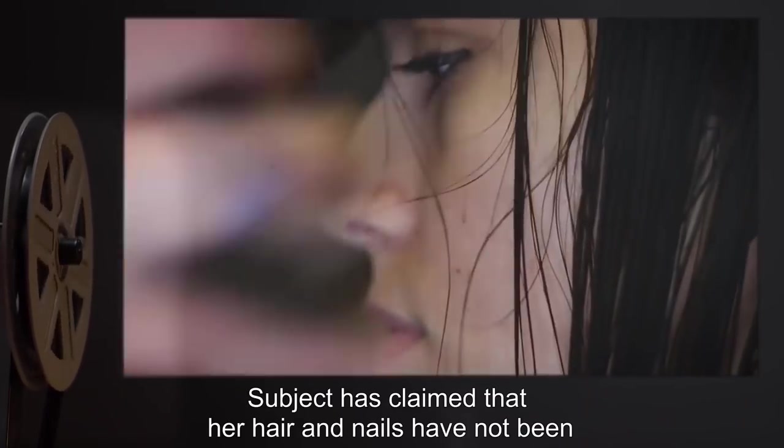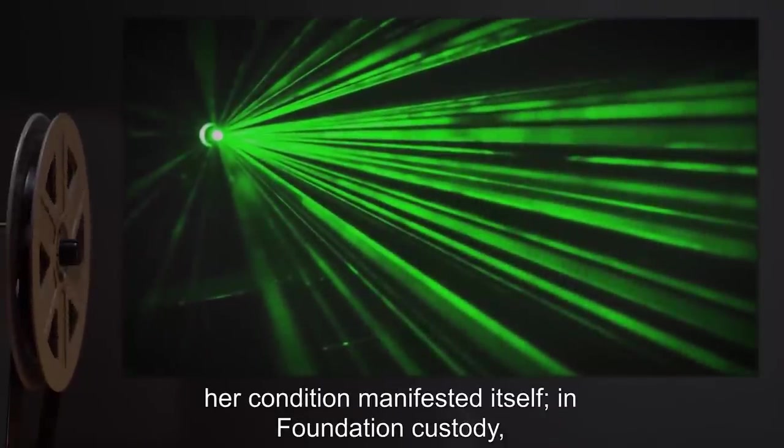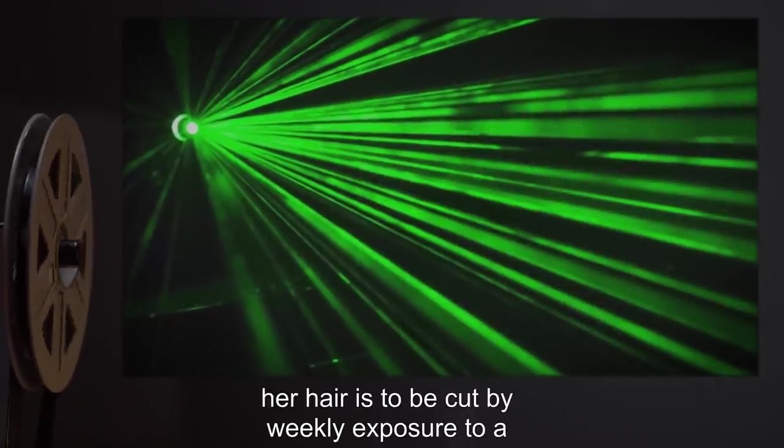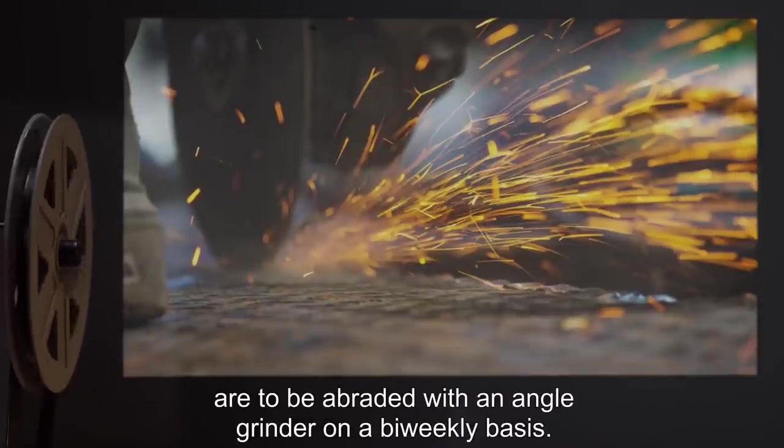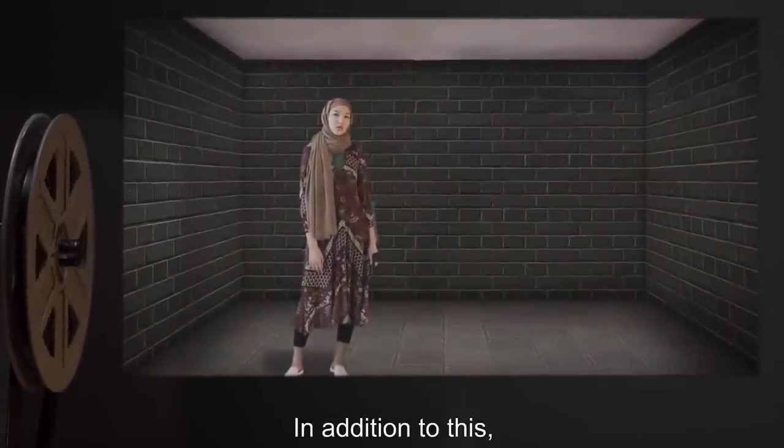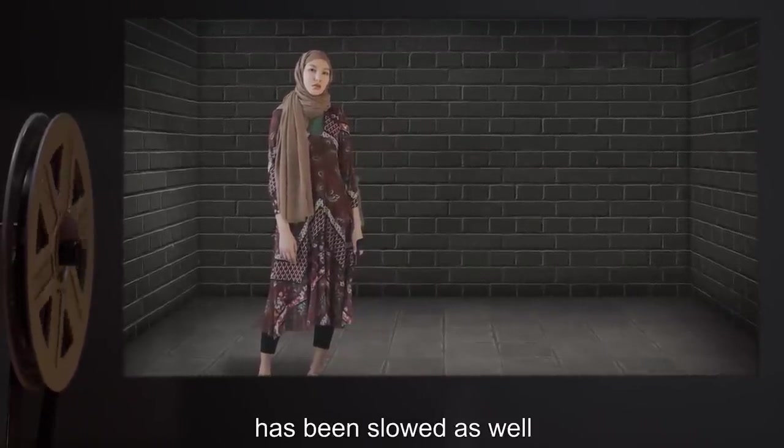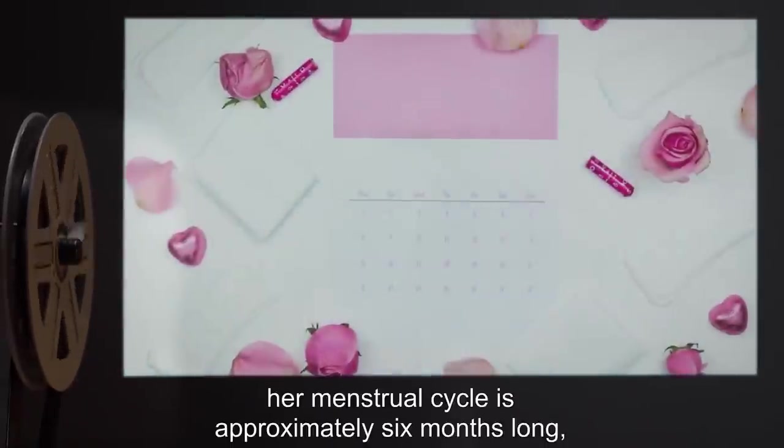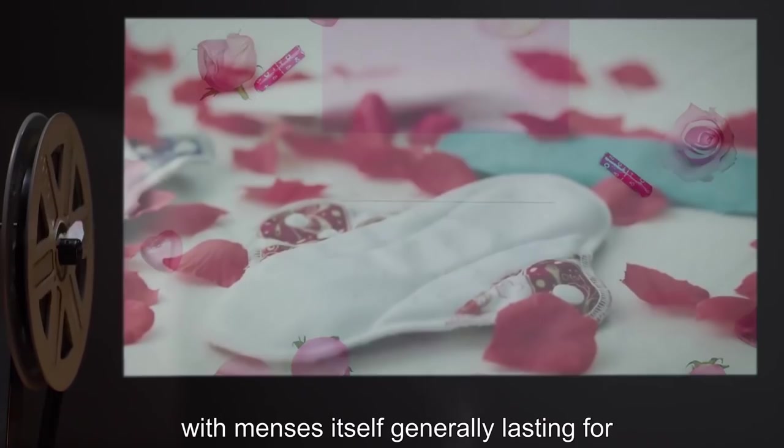This impenetrability of the subject extends through the entirety of the subject, including her hair and nails. Subject has claimed that her hair and nails have not been properly cut since she was 14, just before her condition manifested itself. In Foundation custody, her hair is to be cut by weekly exposure to a watt laser, and her fingernails and toenails are to be abraded with an angle grinder on a biweekly basis. In addition to this, due to her physical makeup and density, her biology has been slowed as well. Subject ages at least a fourth of the normal rate of aging. Also, her menstrual cycle is approximately six months long, with menses itself generally lasting for three to four weeks.